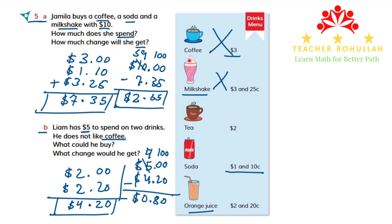So the amount that he gets back as change will be $0.80. This is all about question five of this part. I hope it helps you learn how to add and subtract dollars and cents and also how to regroup the amount from dollars to cents.